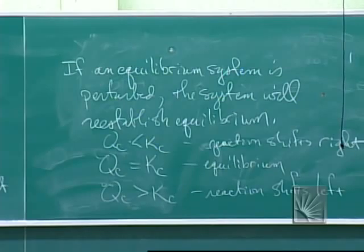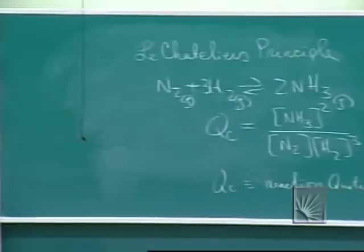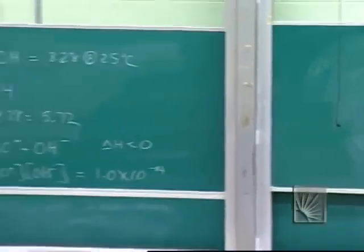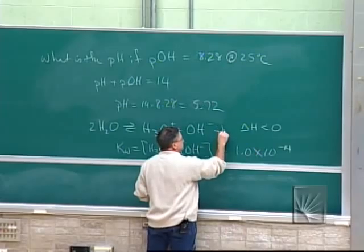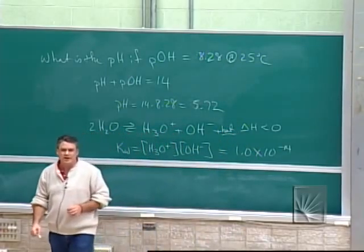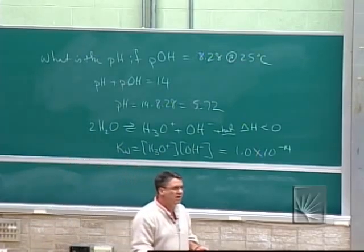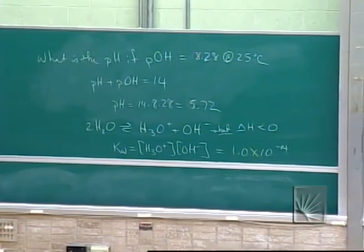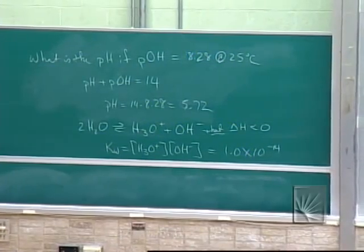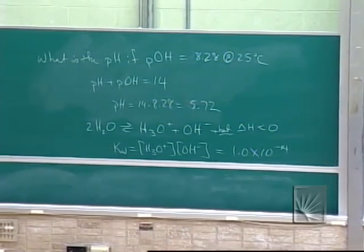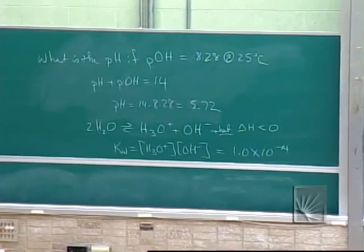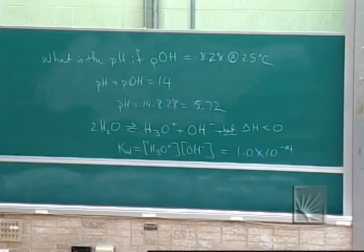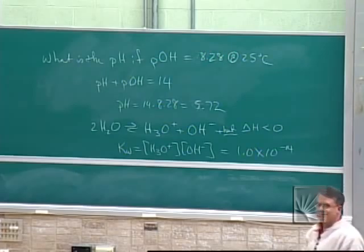If the value you calculate for Q is greater than the value of K, then you've got too much products. To reestablish equilibrium, it will shift back to the left-hand side. The only other possibility is that Q is less than K. And if Q is less than K, then you're going to shift the reaction from left to right. You're going to make more products. Over here in this reaction, hydrogen ions and hydroxide ions. Heat is also a product. It's an exothermic reaction. When you raise the temperature, you're adding heat. Heat is a product. What's it going to do to the equilibrium? It's going to shift it to the left. When it shifts it to the left to re-stabilize, what's the new value of K going to be? It's going to be something less than 10 to the minus 14.